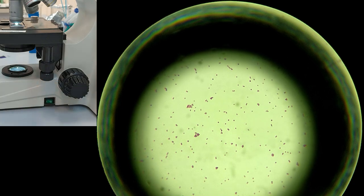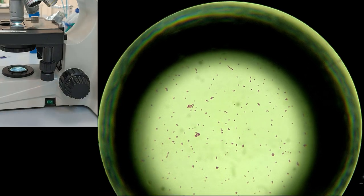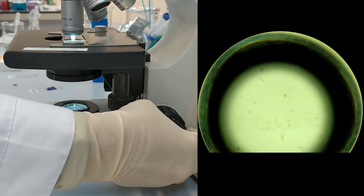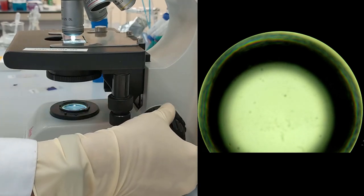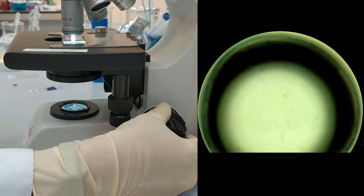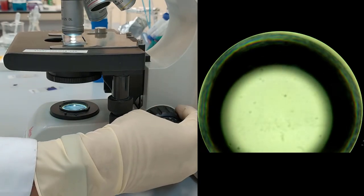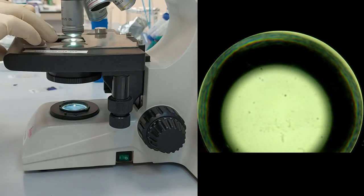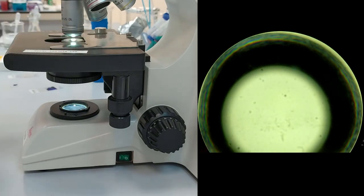So when you finished, again using the big knob, just lower the stage so that you can safely remove the sample. After that, place new sample. In this case, we are going to use the Escherichia coli.